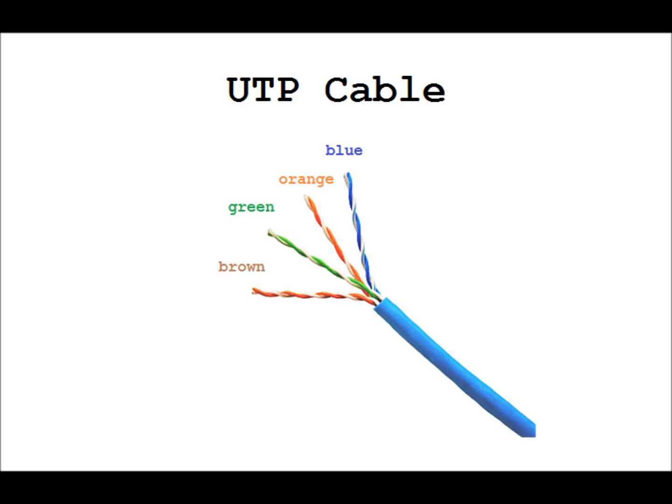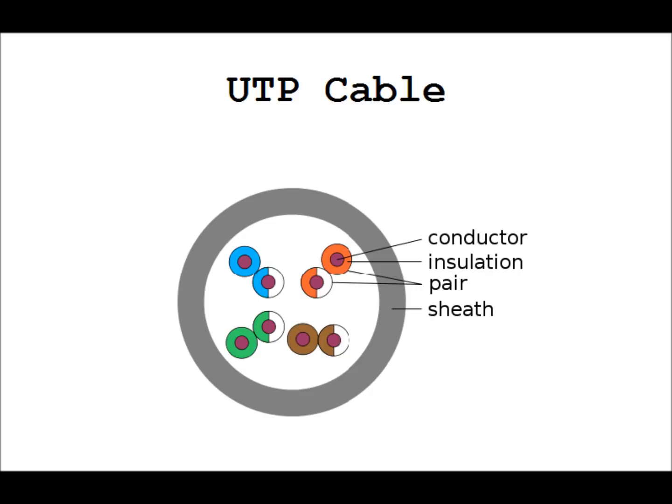There are four different colors: blue, orange, green, and brown. Each is color coded to represent the number of twists in the wire. They all have a different amount of twist to reduce interference — the tighter the twisting, the higher the transmission rate; however, the cost will then go up. Here is a picture of the inside of a UTP wire.